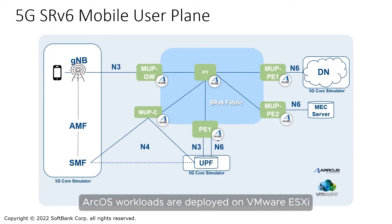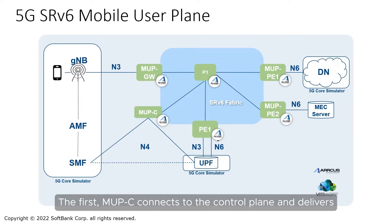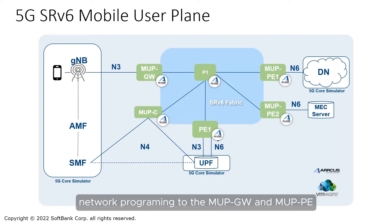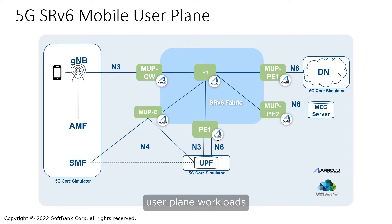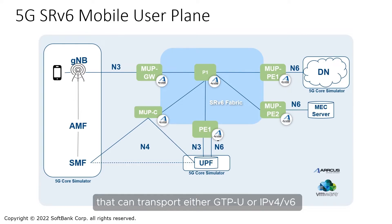ArcOS workloads are deployed on VMware ESXi in three roles. The first, MUP-C, connects to the control plane and delivers network programming to the MUP gateway and MUP PE user plane workloads.